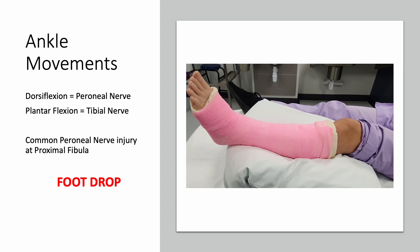If there's a common peroneal nerve injury at the proximal fibula — for example, a plaster cast extending up to the popliteal fossa — that can lead to a common peroneal nerve injury, which will lead to foot drop, because the patient is unable to dorsiflex.